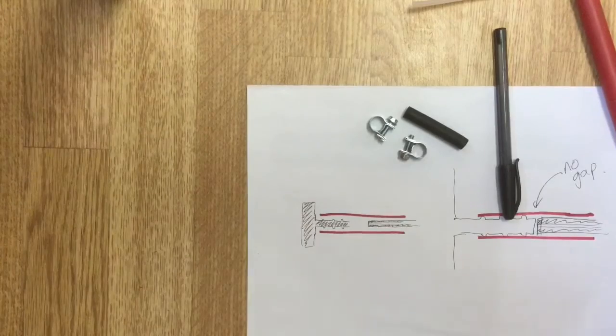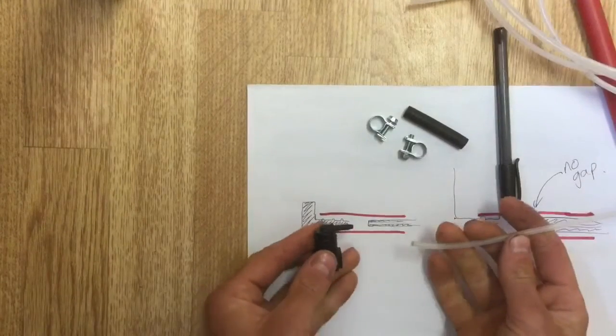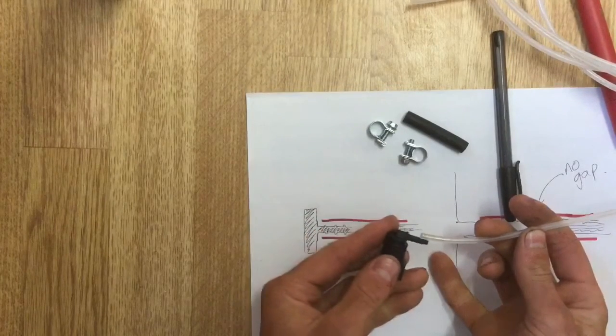We are going to look at joining this to the base of our pump. We're just going to pretend this little nozzle here is the base of our pump, so we need to put these two together.